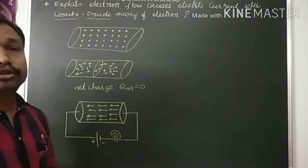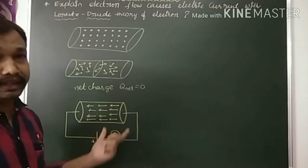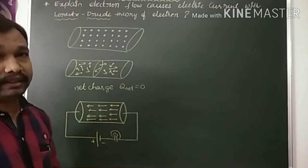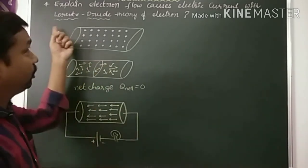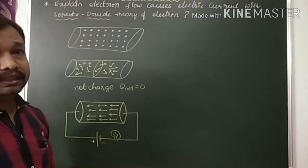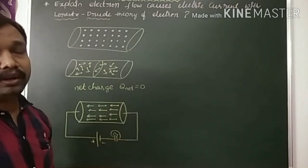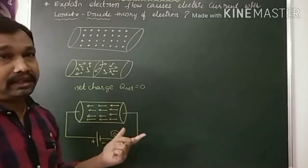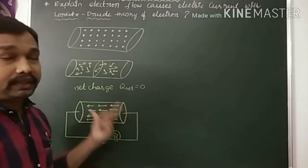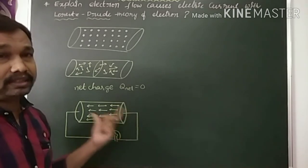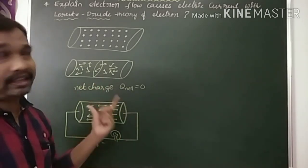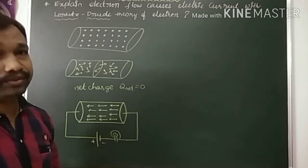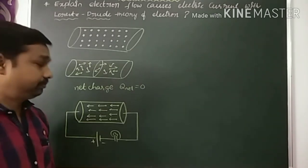This ordered motion of the electrons in a conductor is called electric current. This definition is given by Lorentz-Drude, and this theory is called the Lorentz-Drude theory, proposed in the 19th century. Thank you.